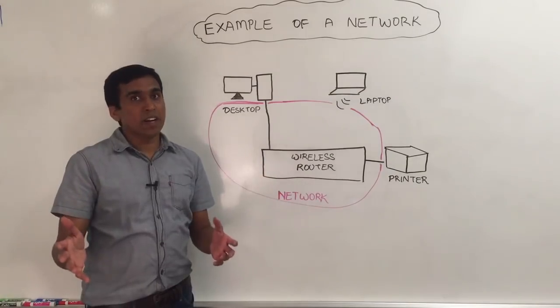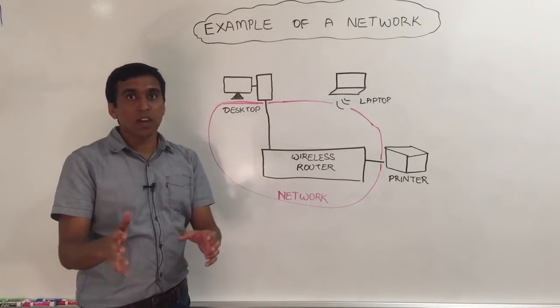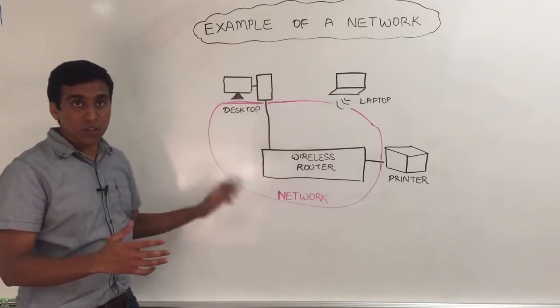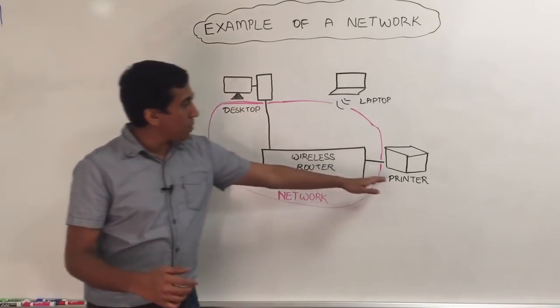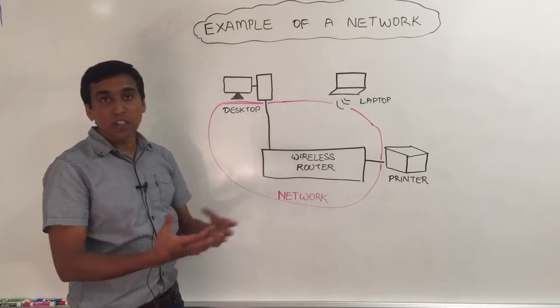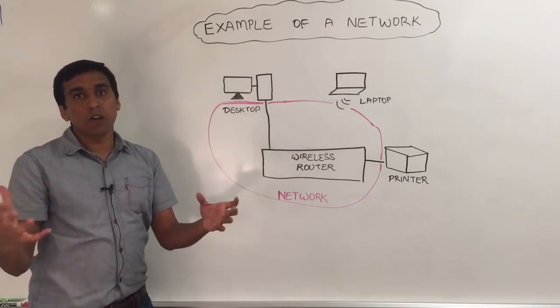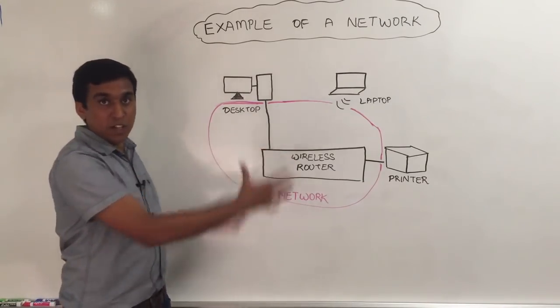So how do we build a network? There are multiple ways you can create a network. The easiest way is to buy a simple wireless router and connect all of your devices to that. In this example, we have connected the desktop and printer using cables and we have connected the laptop using the wireless connection. So these three devices can talk among each other easily using the wireless router. We have just created a network.